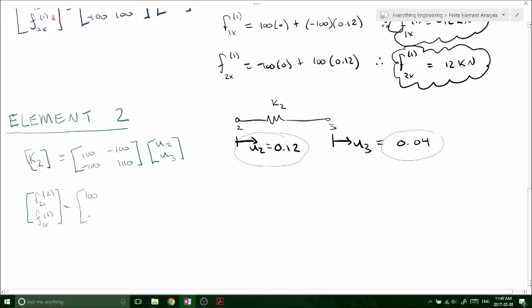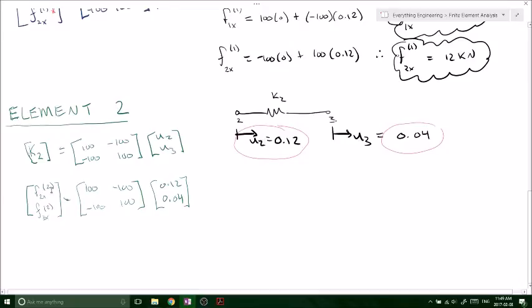And again, same matrix, u2, 0.12, and u3. Now, same thing what we did for the first element, we just do matrix multiplication and solve for our internal forces. So we have f2x due to second member. So the internal force is going to be 8 kilonewtons from the second node on the second member.